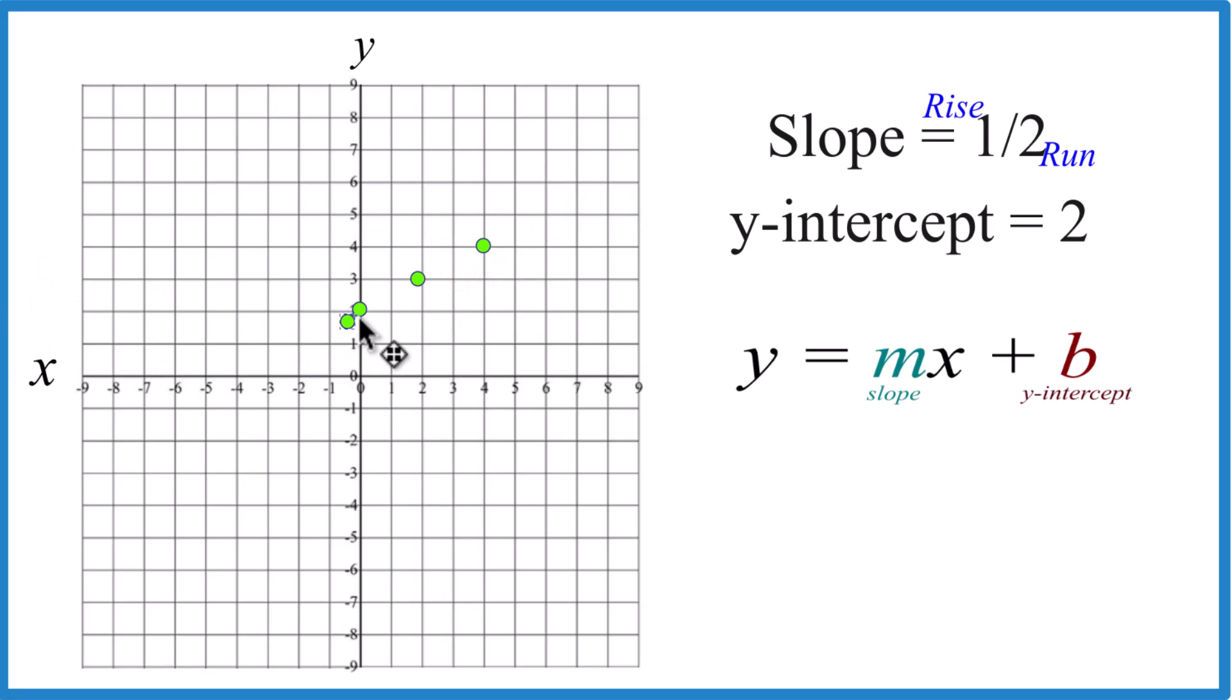Let's go the opposite direction, let's go down one and over two to the left. That's also on our line, down one over two to the left. So this is the line when you have slope of one-half, y-intercept is two.